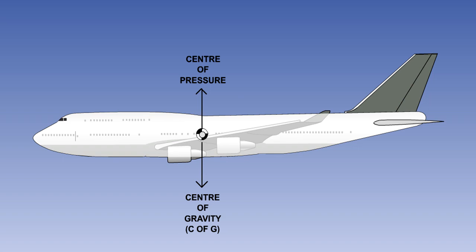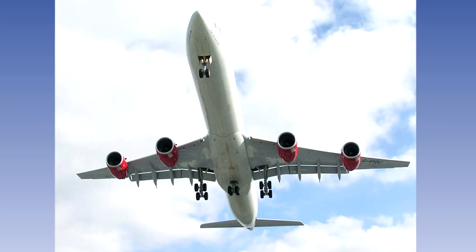On long-haul aircraft this can produce a significant fuel saving. The method usually employed to move the centre of gravity is by transferring fuel between tanks located at the nose and or tail of the aircraft. The Airbus A340 for instance has a fuel tank in the tail specifically for this purpose. Fuel is automatically transferred between this and the wing tanks to maintain the C of G as close to the centre of pressure as possible.